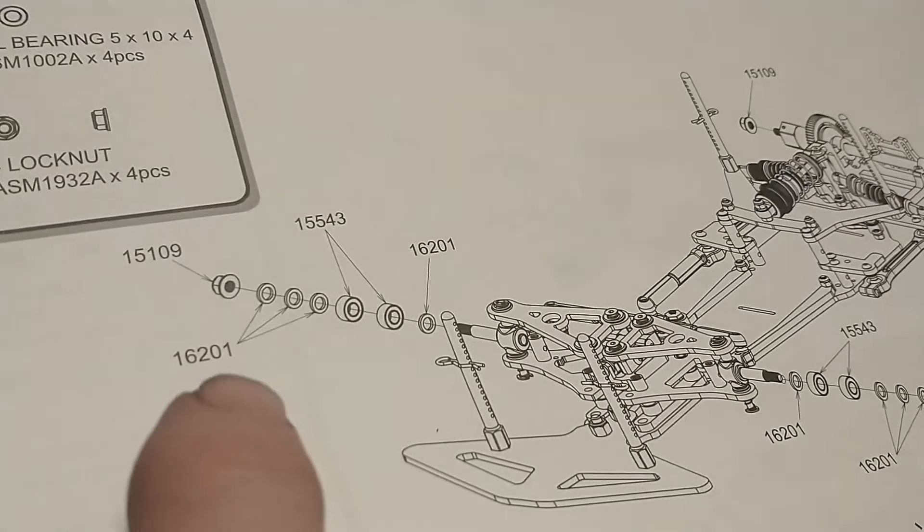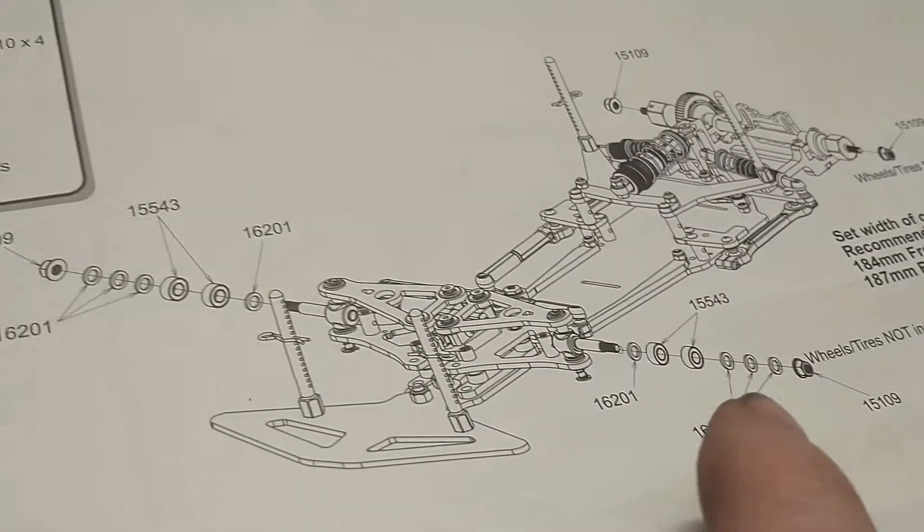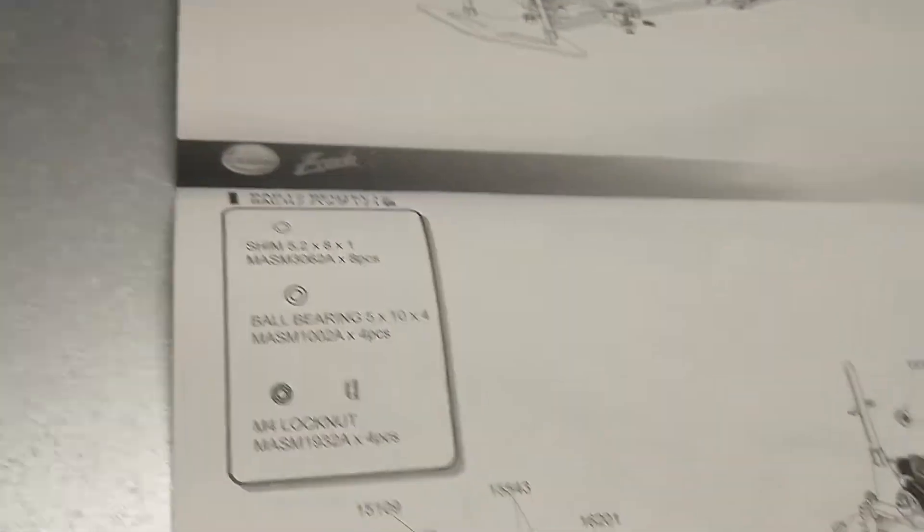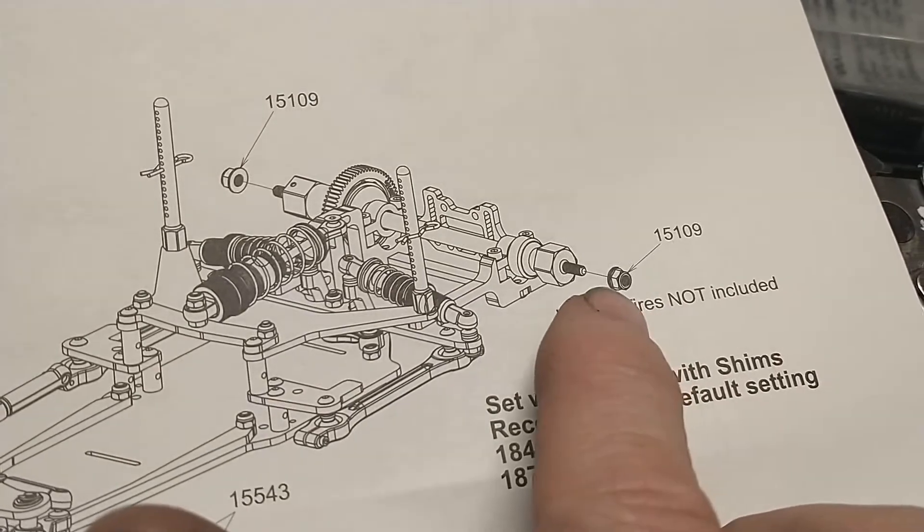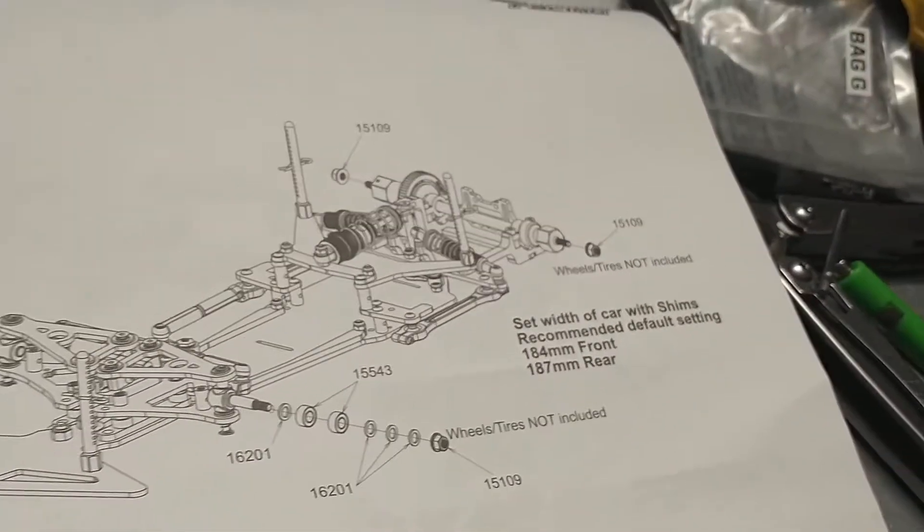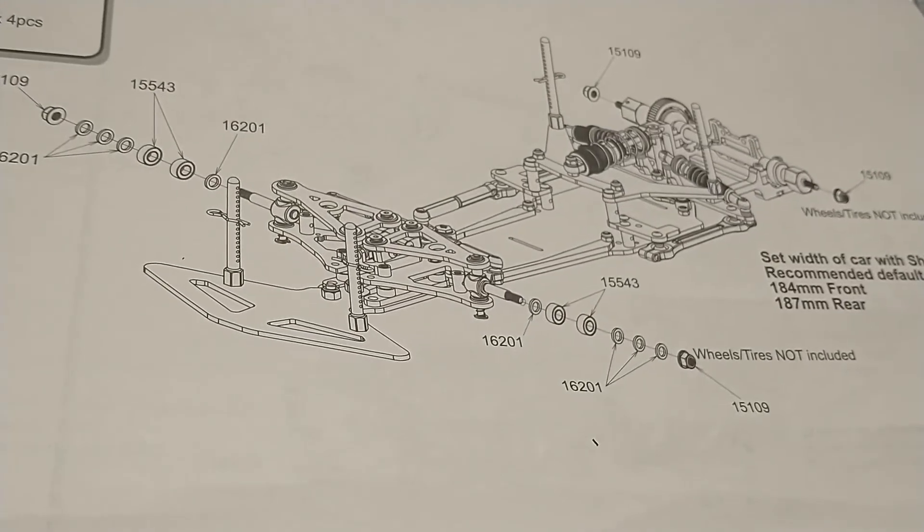So for right now, I'm just going to go ahead and put the bearings, spacers. Looks like we get three washers per side and pretty self-explanatory, and it looks like we'll get just a lock nut on the rear side. And this video here will be done. I'm sure you guys can figure that part out as well.